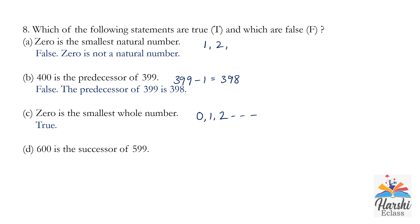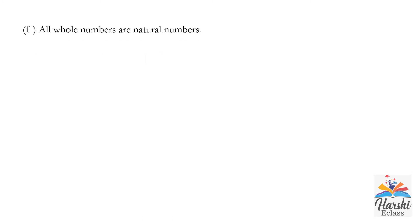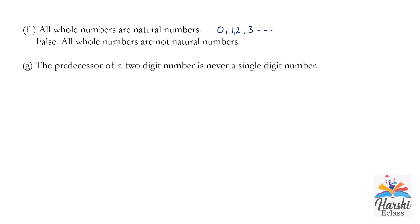D: 600 is the successor of 599 — True; 599 plus 1 equals 600. E: All natural numbers are whole numbers — True. F: All whole numbers are natural numbers — False; 0 is a whole number but not a natural number. G: The predecessor of a two-digit number is never a single-digit number — False; for example, the predecessor of 10 is 9, which is a single-digit number.